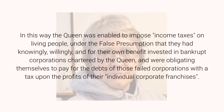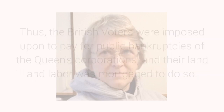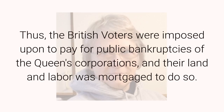In this way the Queen was enabled to impose income taxes on living people, under the false presumption that they had knowingly, willingly, and for their own benefit invested in bankrupt corporations chartered by the Queen, and were obligating themselves to pay for the debts of those failed corporations with a tax upon the profits of their individual corporate franchises. Thus the British voters were imposed upon to pay for public bankruptcies of the Queen's corporations, and their land and labor was mortgaged to do so.